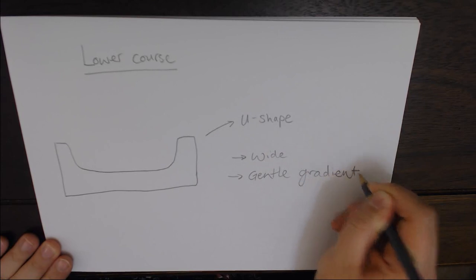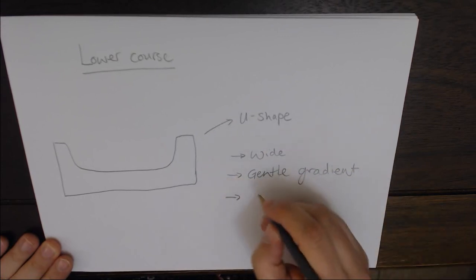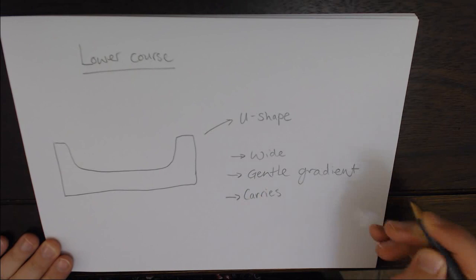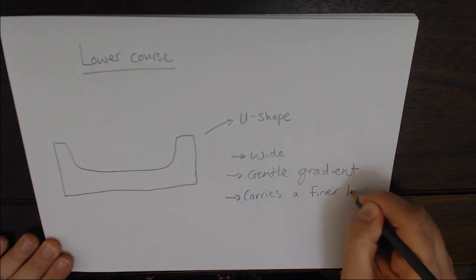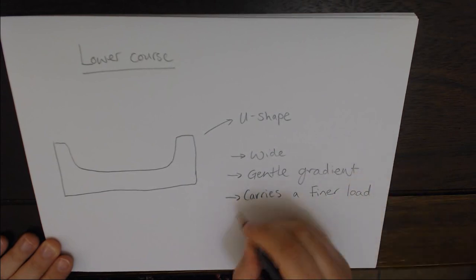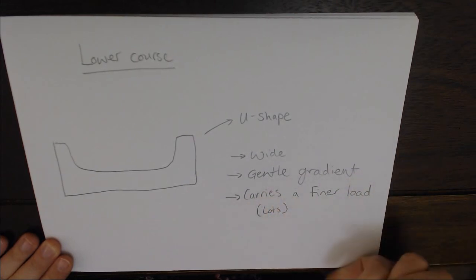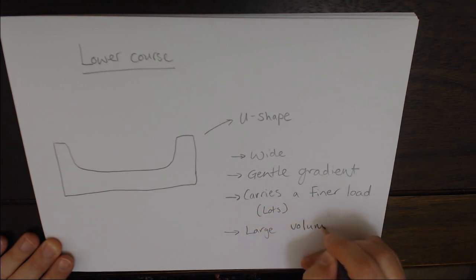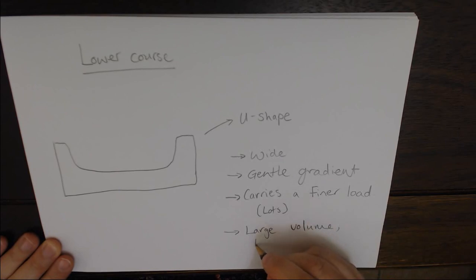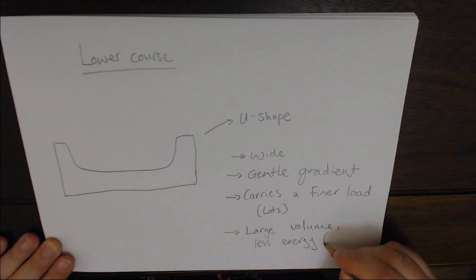It can suspend a lot of matter - a lot of load - but it has to be small load because it doesn't have the same amount of power behind it. There is less gravity at work, so your lower course can carry a lot because there is a lot of water at this stage, but it can't carry a lot of heavy things. It tends to carry your sands and silts, and your water will often look orangey or muddy because of what it is carrying.